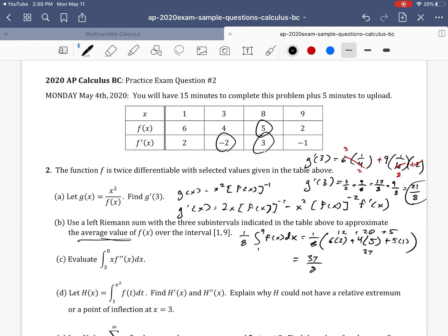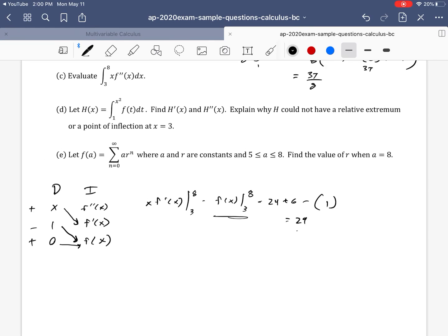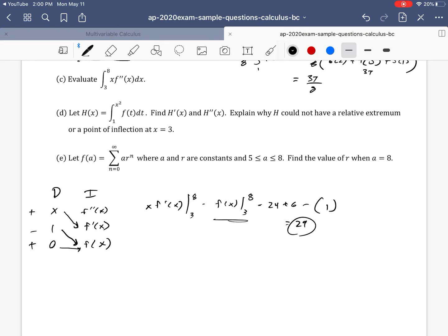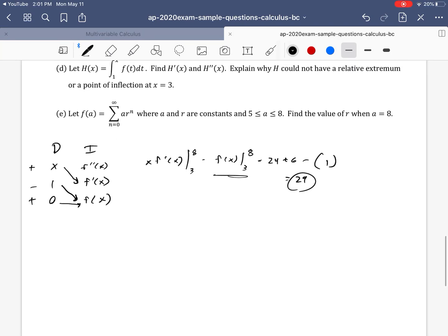And then we have minusing this part right here. f of 8 is 5 minus f of 3, which is 4. So that's just a 1. So we get 29 as our answer there.